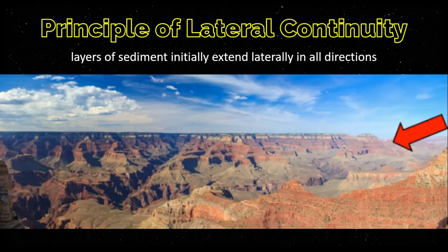This is the panorama of the Grand Canyon from the South Rim. If you notice, layers of the same rock type are found across canyons at the Grand Canyon. Take note of the white layer on the top that is continuous throughout, despite the presence of gaps in between. This is a real-life scenario of this principle.